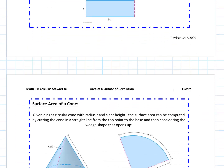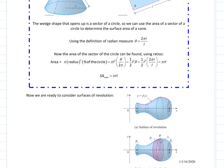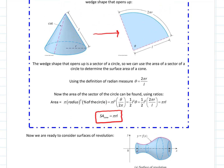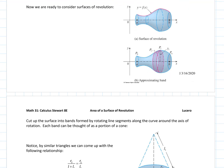The surface area of a cone: if we take a right circular cone with radius r and slant height l, and cut it up the side and open it up, we get a wedge shape. Using radian measure and thinking about what percent of the larger circle that wedge represents, the surface area of the cone is π times the radius times its slant height.